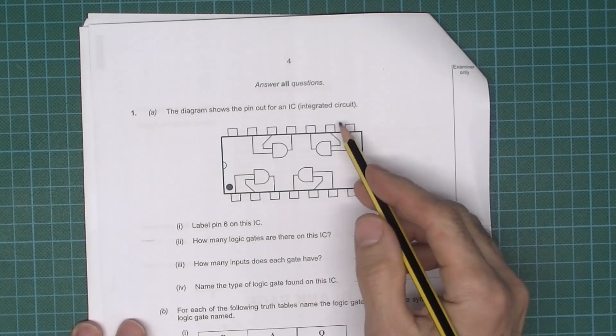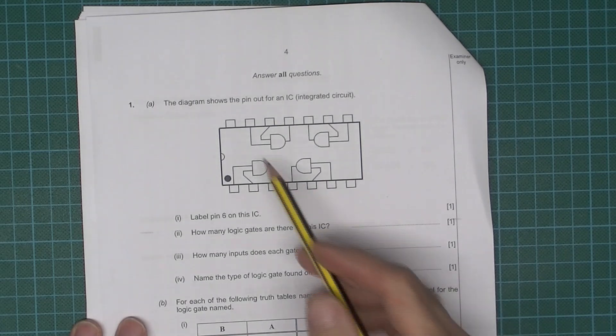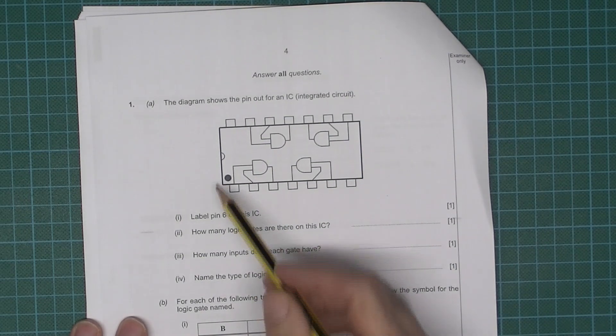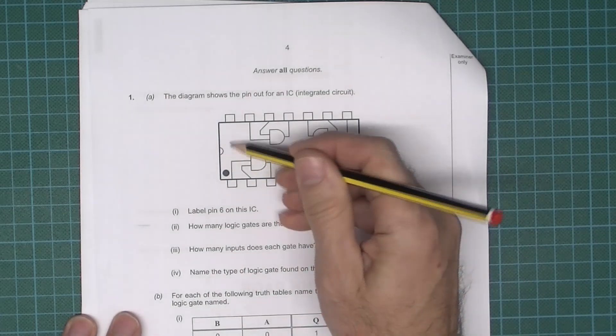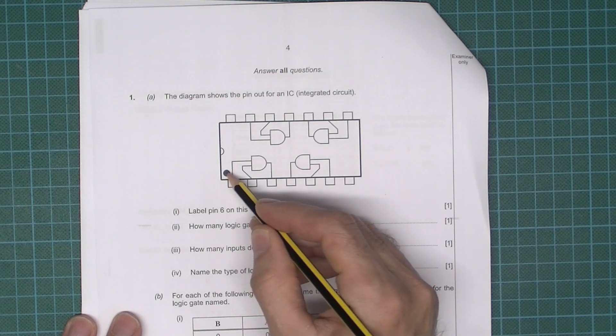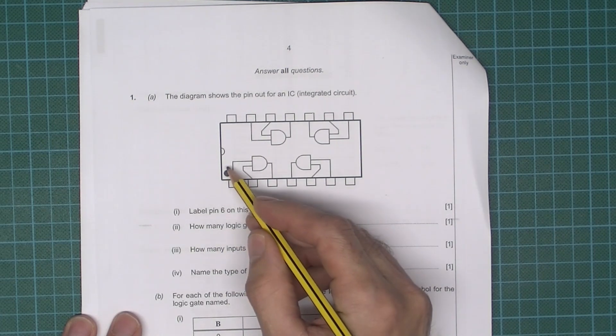So the diagram shows the pin out for an integrated circuit. Hopefully you would recognize this immediately as being AND gates, and hopefully you also know that this cut out here shows you the orientation of the IC.